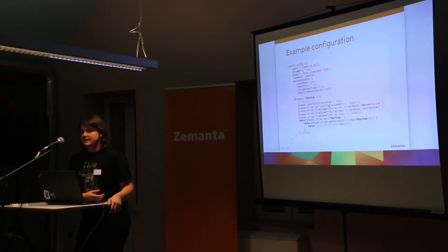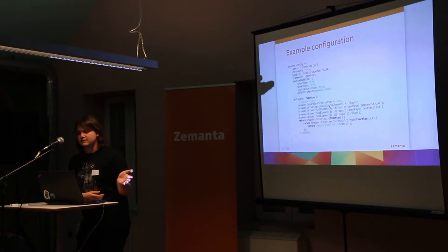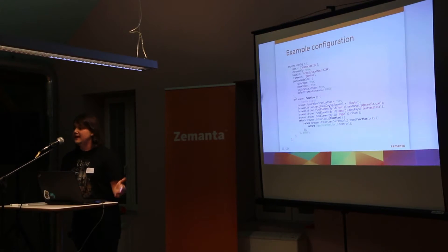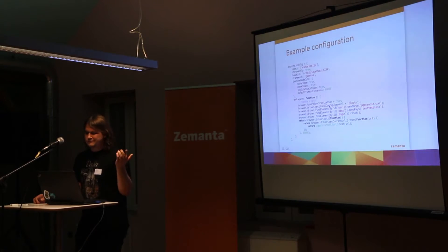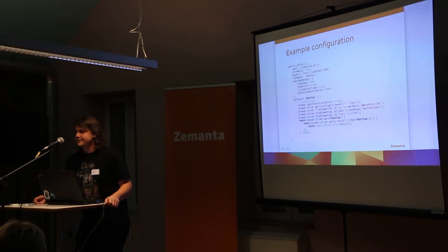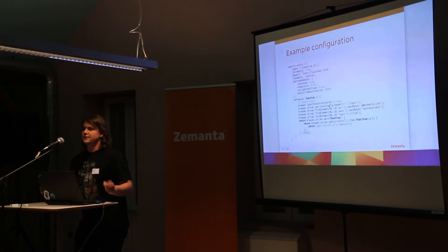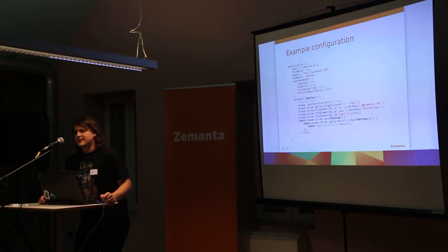Let's look at an example configuration. You need to specify where your tests are — the specs, the scenarios. You have to specify the browsers; here we just use Chrome. You specify a base URL, a framework, and framework options. The most important part is the OnPrepare configuration function, which prepares your application for the tests to run. This can be authentication or many other things that need to be done before you can start your tests.